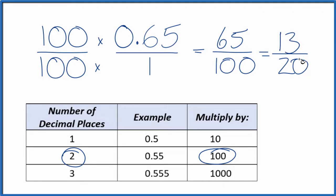And if you divide 13 by 20 on a calculator, you'll get 0.65. It's just that we've written this decimal 0.65 as a fraction.